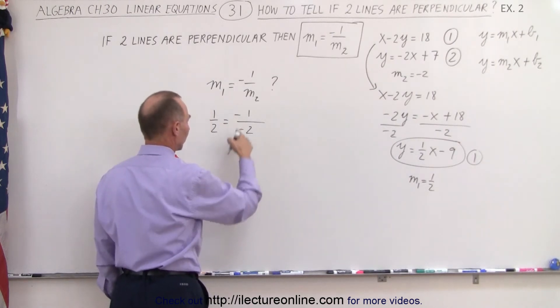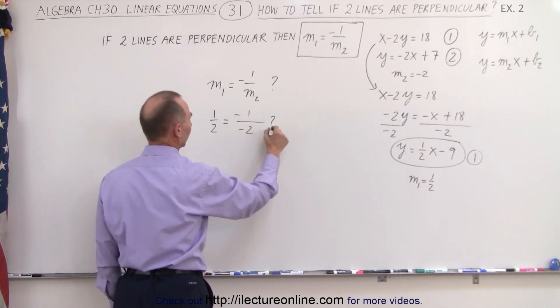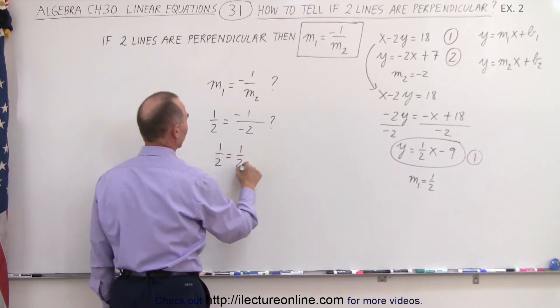And notice the negative signs cancel out, so that's question mark. One-half does indeed equal to one-half, and so that means that the two equations are indeed perpendicular.